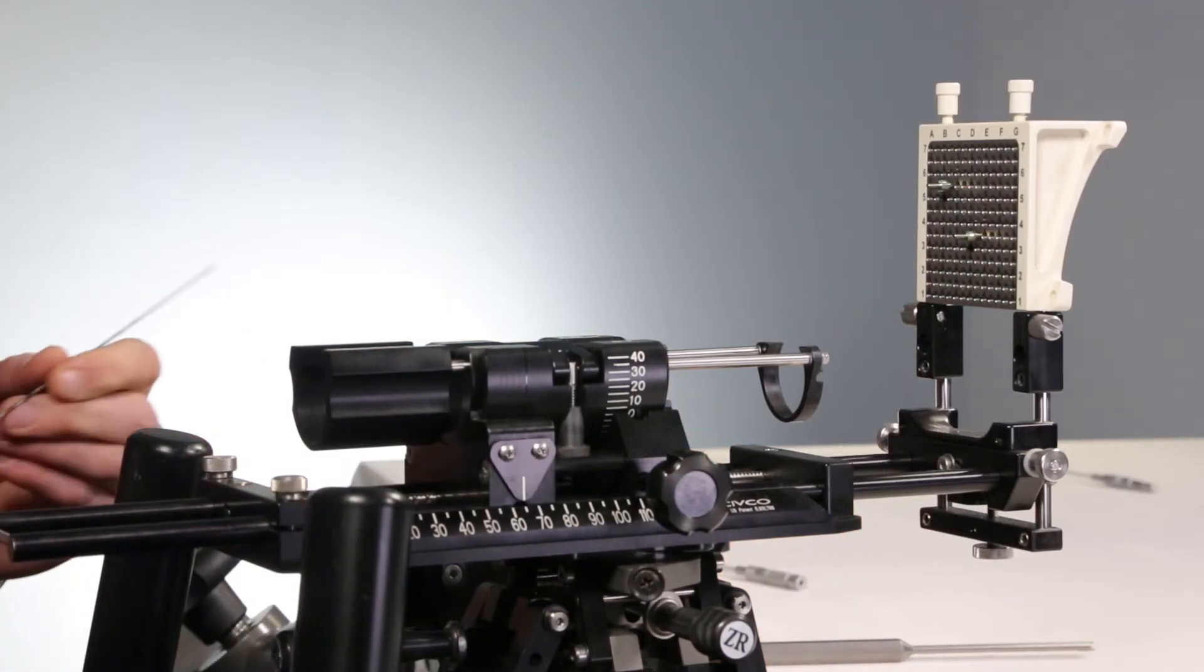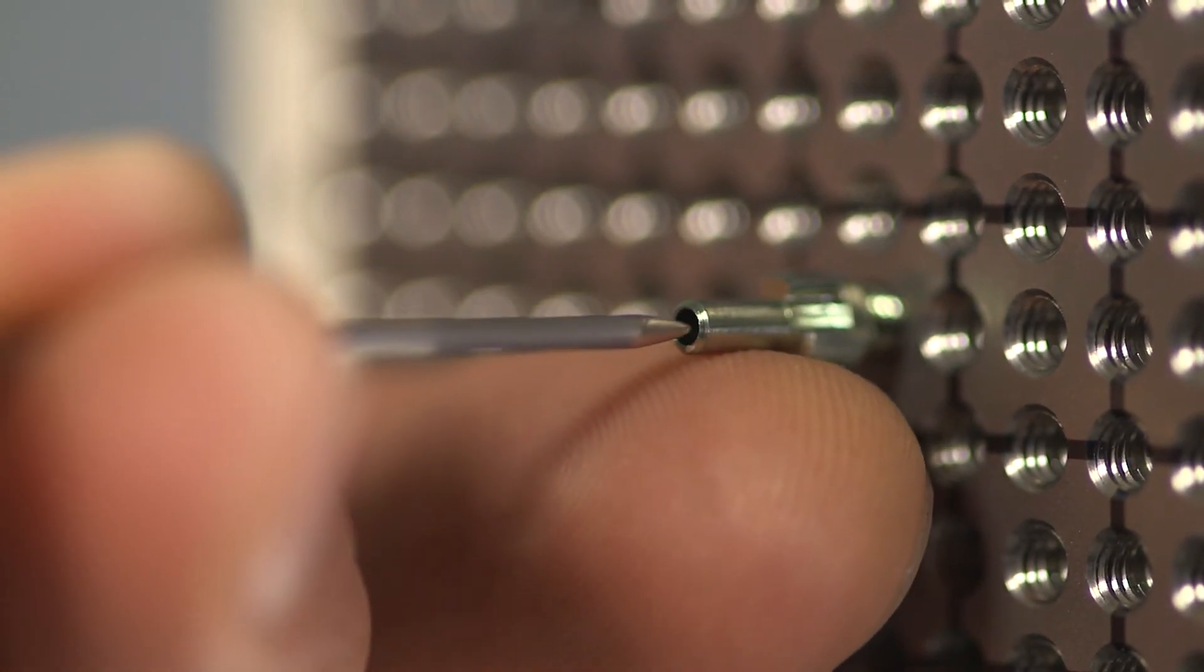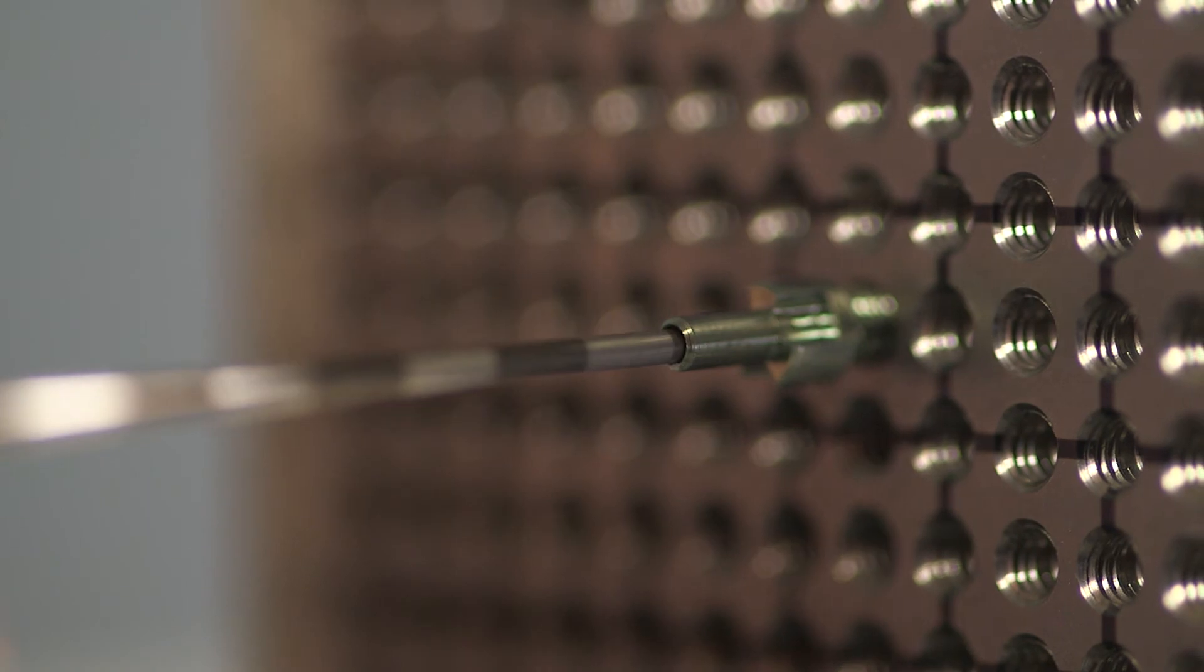In the next step, the needles are inserted. Here we show the insertion with interstitial needles made of steel from Eckert & Ziegler-Bebig.